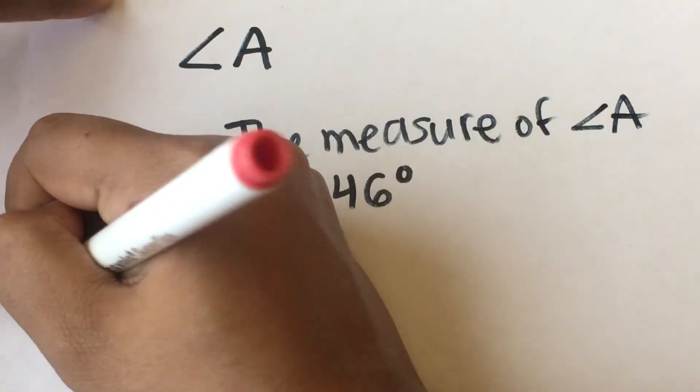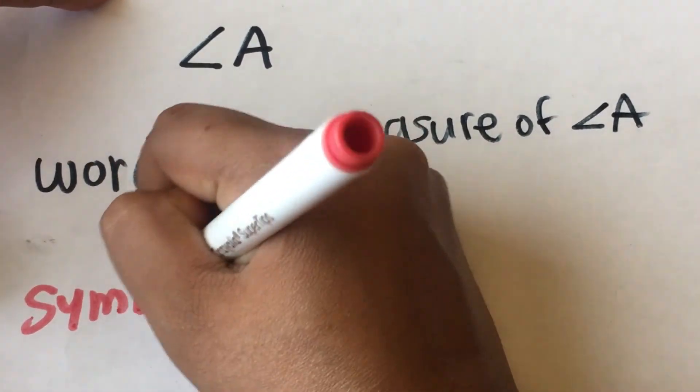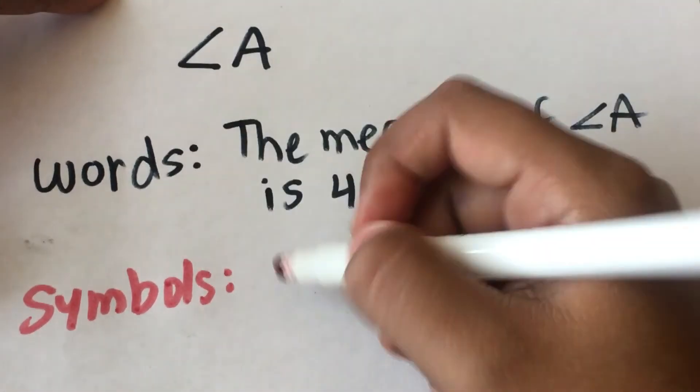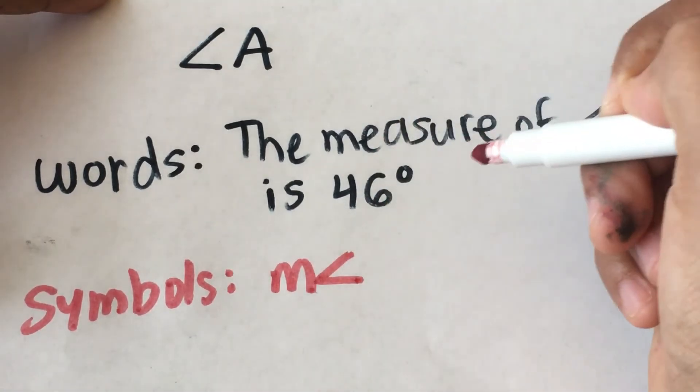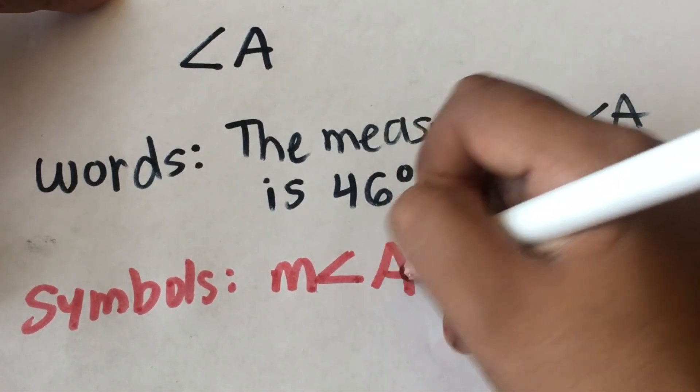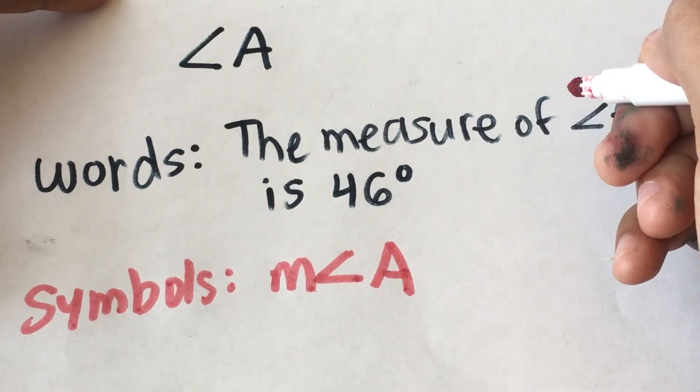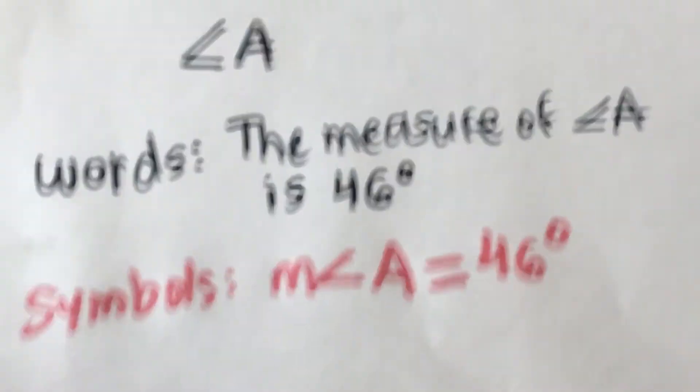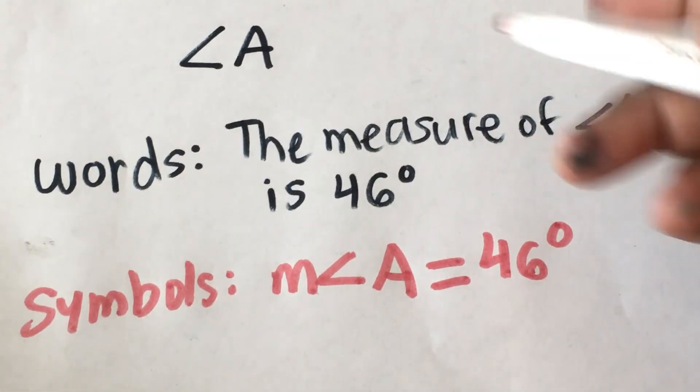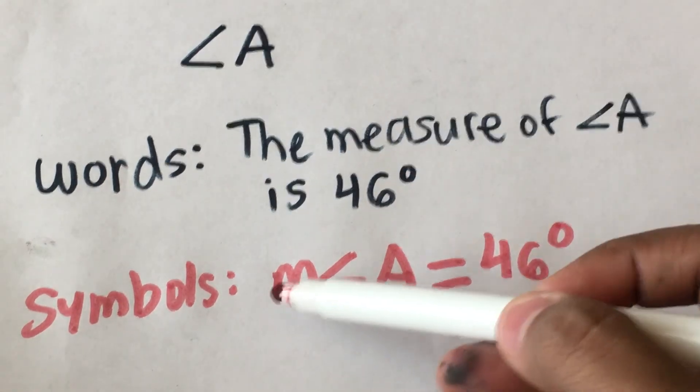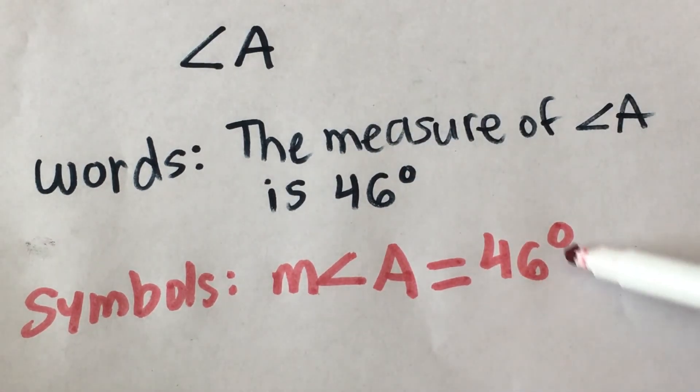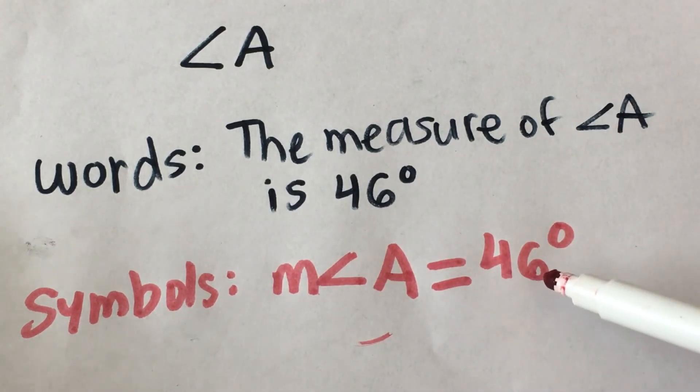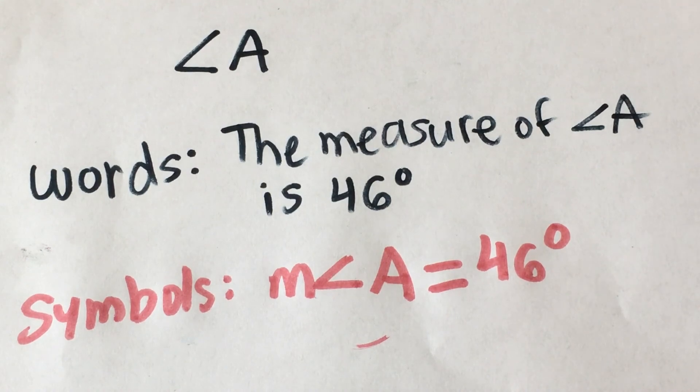And in symbols, sometimes we want to just be able to write in symbols the same way of writing it, except you put a letter m, the symbol of an angle, the three letters or the one letter you use to represent the angle, equals 46 degrees. Okay, so remember, here's the key difference: this is the name of the given angle. This, m, this represents the measurement of a given angle, which is equal to that. That's it.